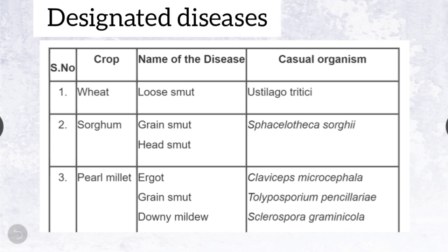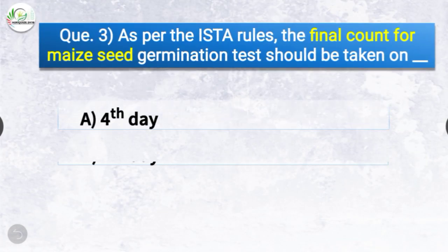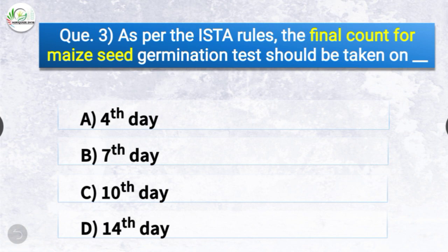More detail: The causal organism of loose smut of wheat is Ustilago tritici. The causal organism for grain smut and head smut of sorghum is Sphacelotheca sorghi. The causal organism for ergot in pearl millet is Claviceps microcephala. The causal organism for grain smut in pearl millet is Tolyposporium penicillariae, and downy mildew in pearl millet is caused by Sclerospora graminicola.